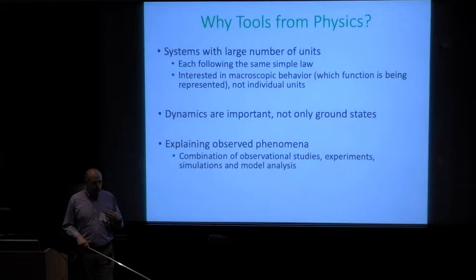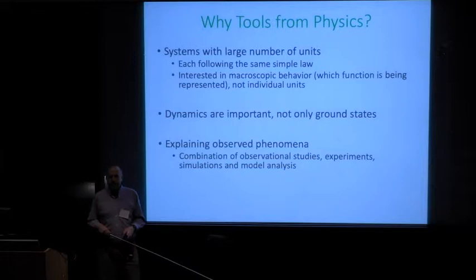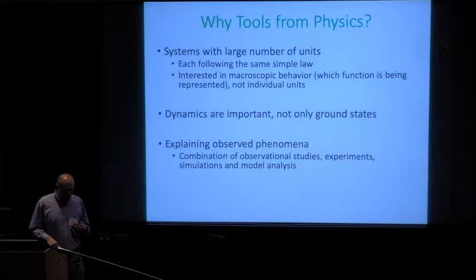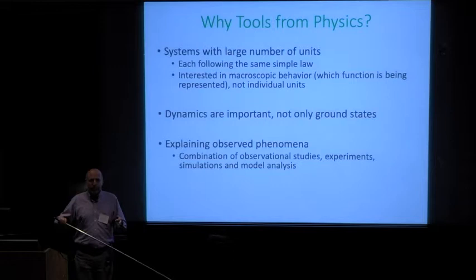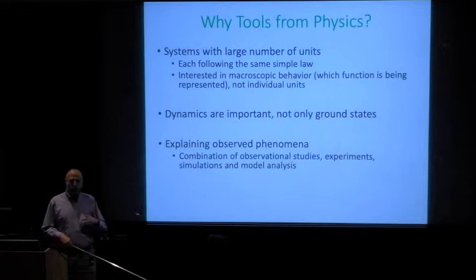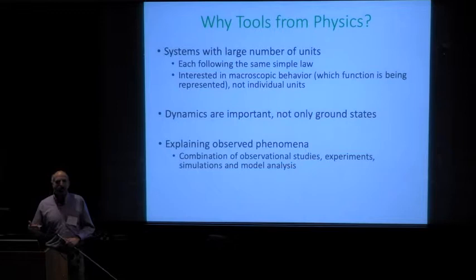Second, the dynamics are also very important. It's not just understanding the ground state — the zero-error solutions. We really need to understand the dynamics of training. Third, the type of study is different from traditional machine learning: we're trying to understand an actual observed phenomenon. Deep learning works — this is a phenomenon — and now we're trying to understand it rather than build a system. The methods are a combination of observational studies, experiments, simulations, and model building, which is exactly the type of process in physics and is fairly different from machine learning.